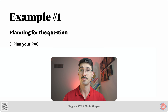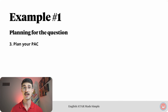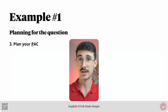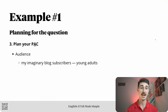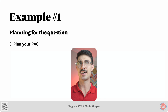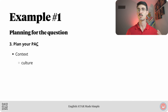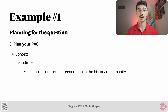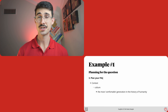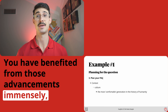Step number three: plan your PAC. The P stands for purpose, and I have planned my purpose to be to reflect on the impact of my greatest experiences and encourage readers to seek out their own. The A stands for audience — this will be my imaginary blog subscribers who are young adults. The C: the first sub-part is cultural context. One relevant thing to note is that we are the most comfortable generation in the history of humanity. Quality of life continues to improve as technology does, and if you are watching this course, you have benefited from those advancements immensely.